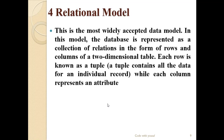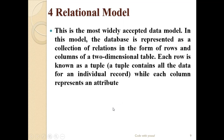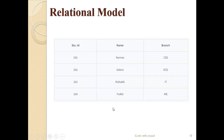The fourth one is the relational model. The relational model is the most widely accepted data model. In this model we represent our data in relations — rows and columns — in a two-dimensional table. For example, we display student data with columns student ID, name, and branch.